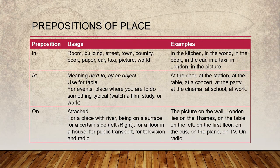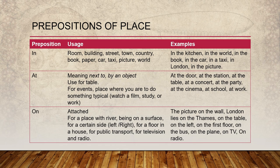Prepositions of place: in, at, and on. Let me explain the basic difference between in, at, on, over, and above. We use 'above' when something is not moving. We use 'over' when something is moving. We use 'on' with the surface of something. 'In' is used to talk about a room, building, street, town, country, book, paper, car, taxi, picture, and so on — for example, in the kitchen, in the world, in the book.